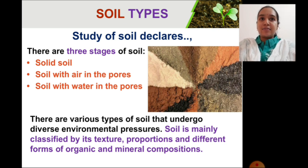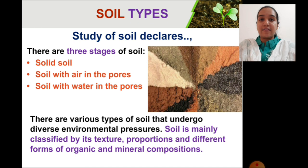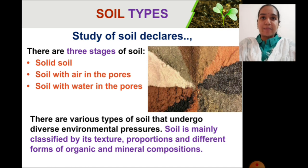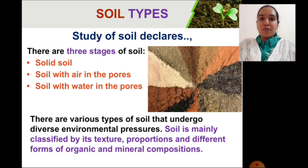The types of soil we are going to learn are mainly classified based on the factors of texture and proportion. Texture means the feel — how we feel when we touch it, like whether it is soft or hard. Proportion means the size and different forms of organic and mineral compositions, that is, the humus and other nutrients present in it.